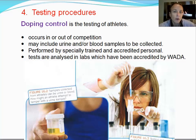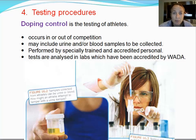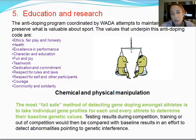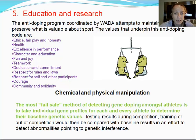ASADA and WADA are also responsible for establishing testing procedures. Doping controls for athletes don't just occur in competition but also out of competition. Samples could be hair, blood, or urine. These samples are analyzed by trained staff who are accredited by WADA. Education and research is a huge part of what WADA and ASADA do — it's all about protecting the integrity of sports so that athletes can compete fairly and without cheating.